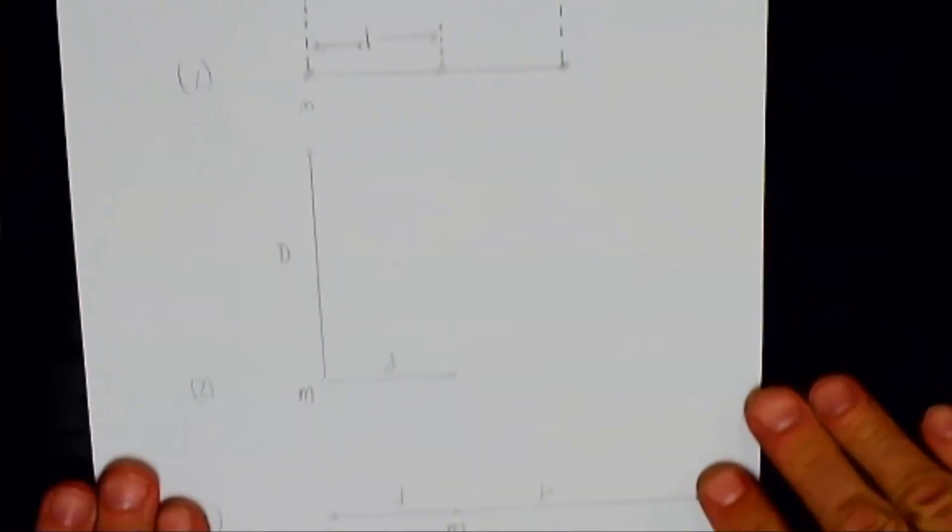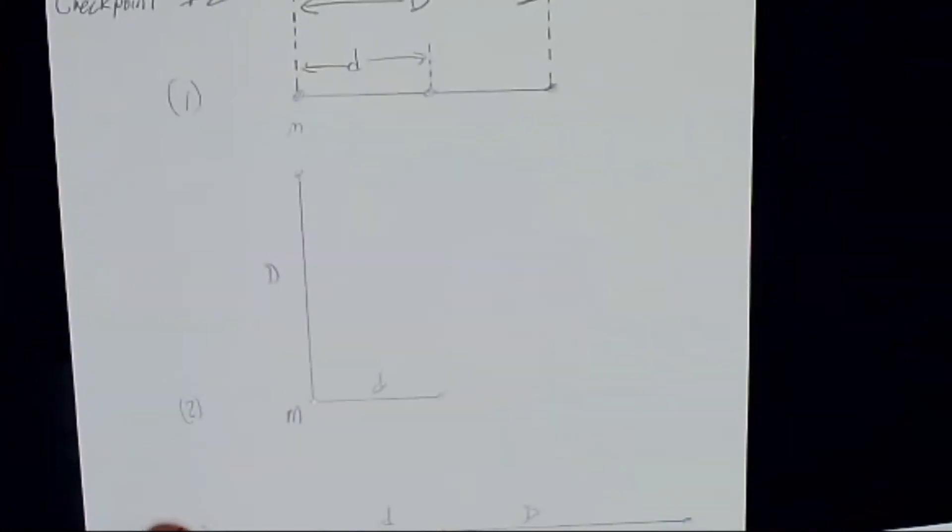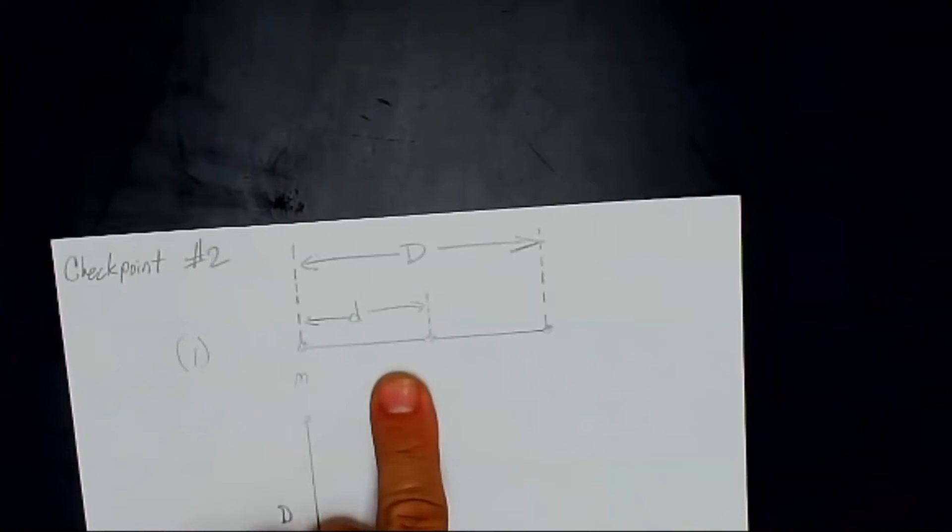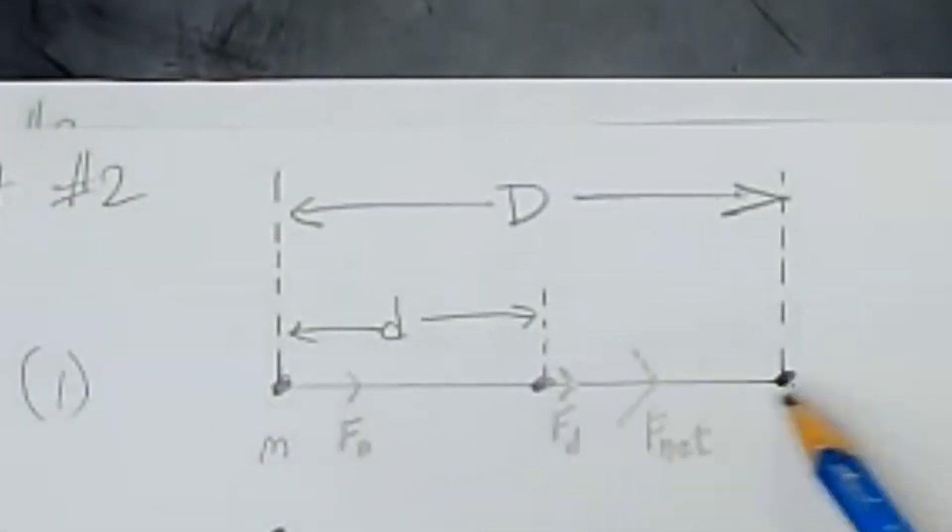So I've redrawn these large, so that we can draw some force diagrams on them. So let's start off with the first one. Mass M is being attracted to the right from this particle and this particle.